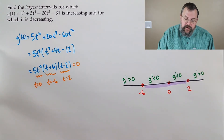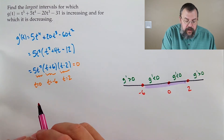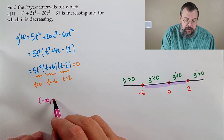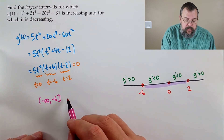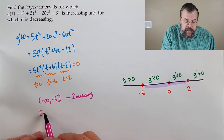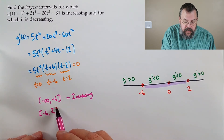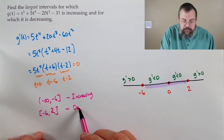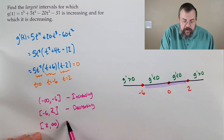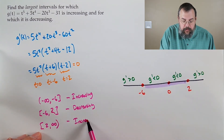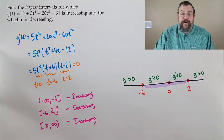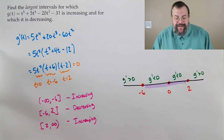So our answer: the interval from negative infinity to negative 6 — we are increasing. From negative 6 to positive 2 — we are decreasing. And from positive 2 all the way out to infinity — we are back to increasing. We don't include infinity because infinity is not a number; it's more of a concept meaning arbitrarily large.